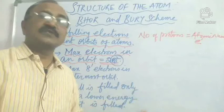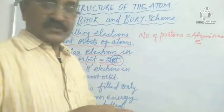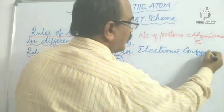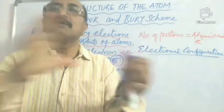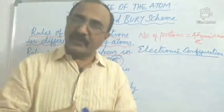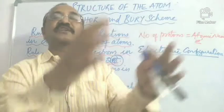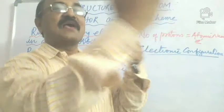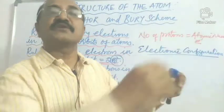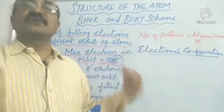Now what is the need for knowing this? We are talking about the filling of electrons in the different orbits. One more term we have to learn is called electronic configuration. That is the picture or representation of an atom showing how the electrons are arranged in the different orbits. We call it electronic configuration — writing the number of electrons in the K, L, M, N shells for atoms of the elements.